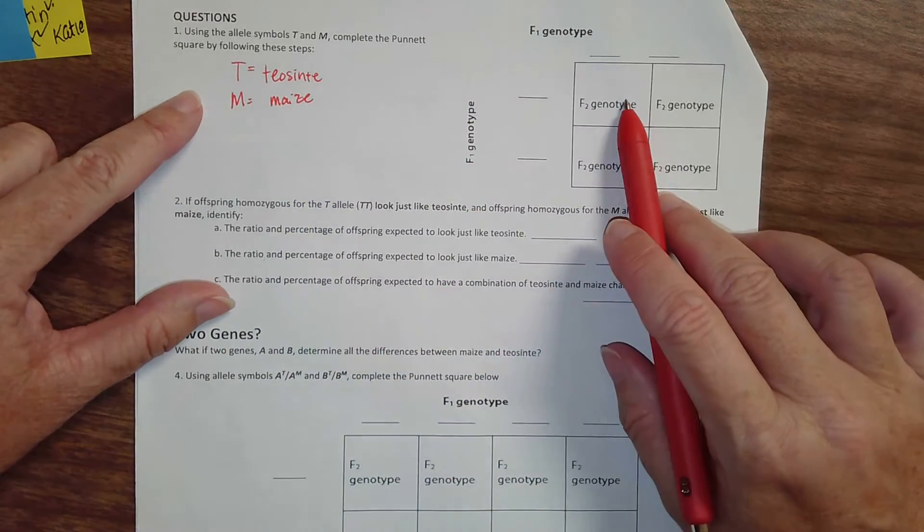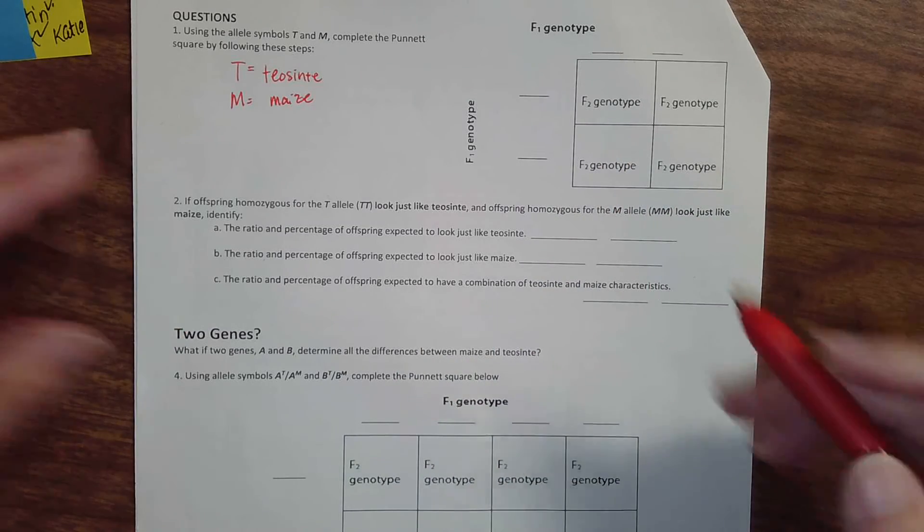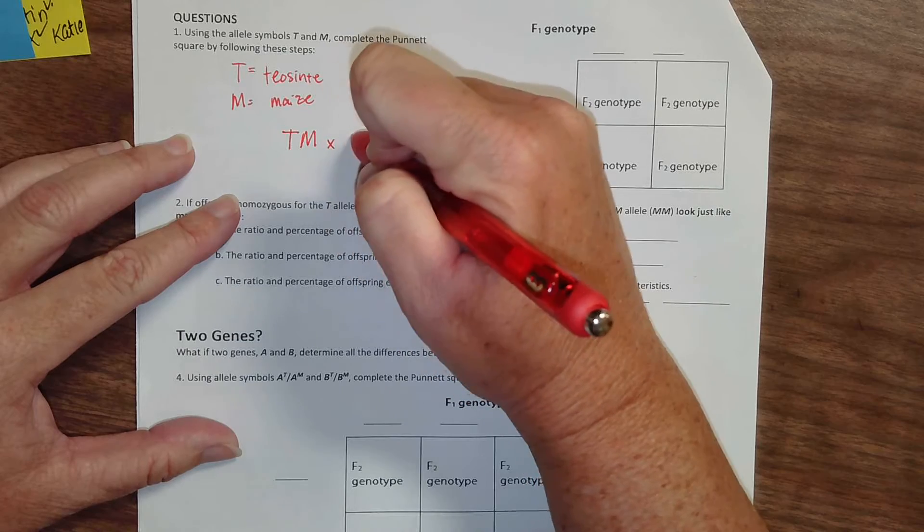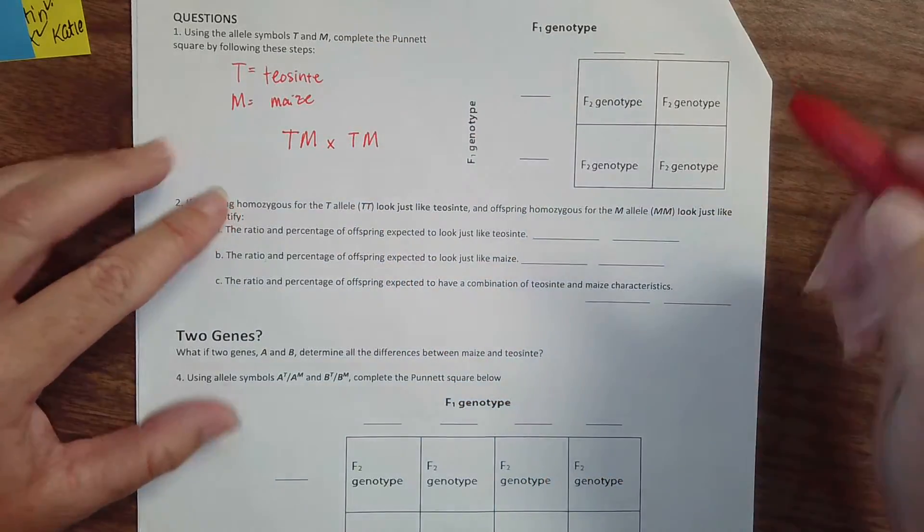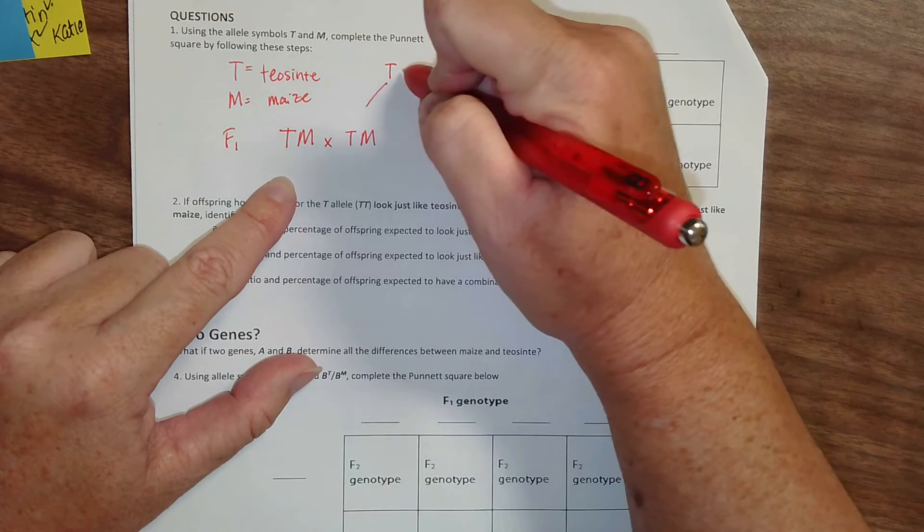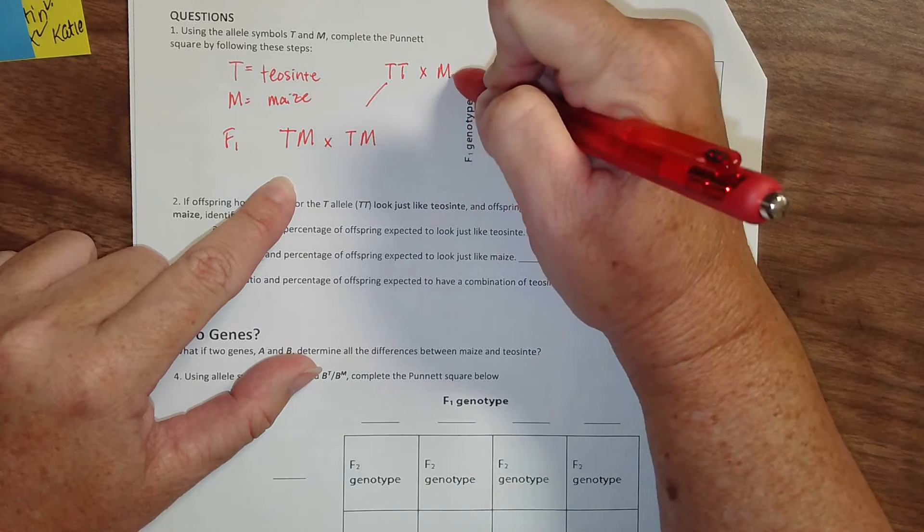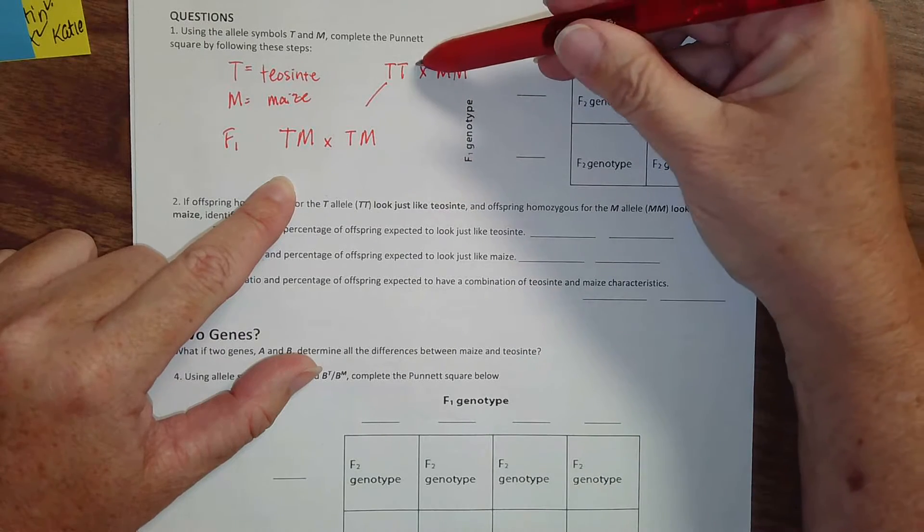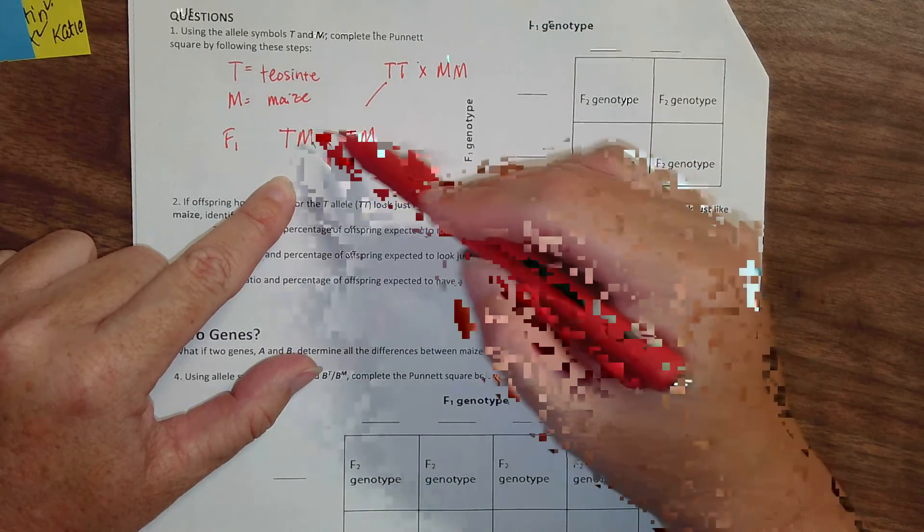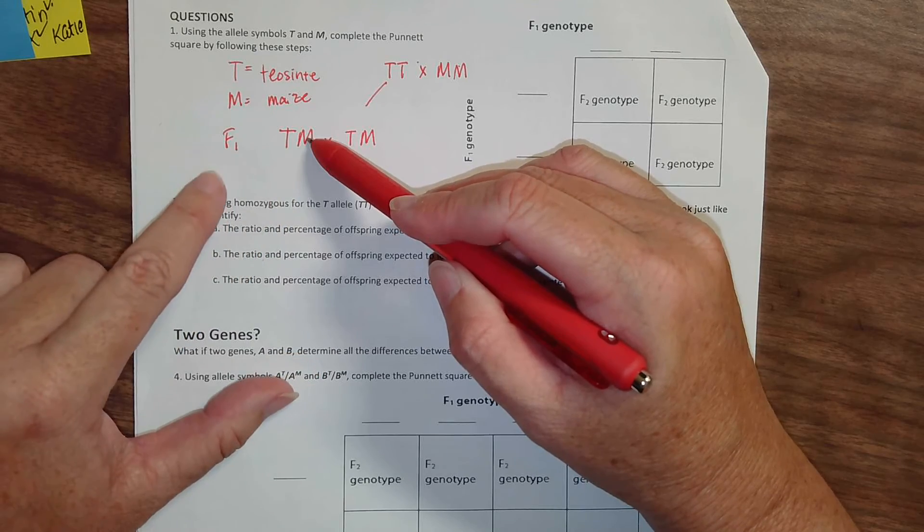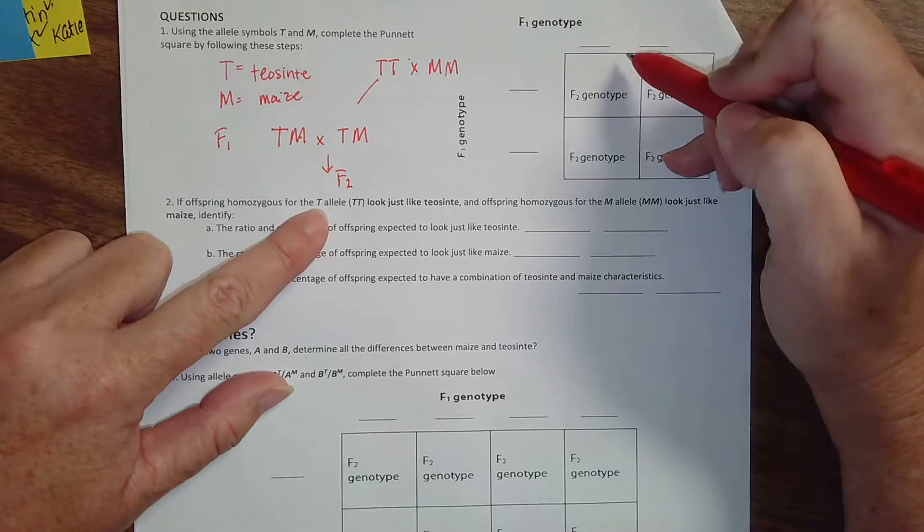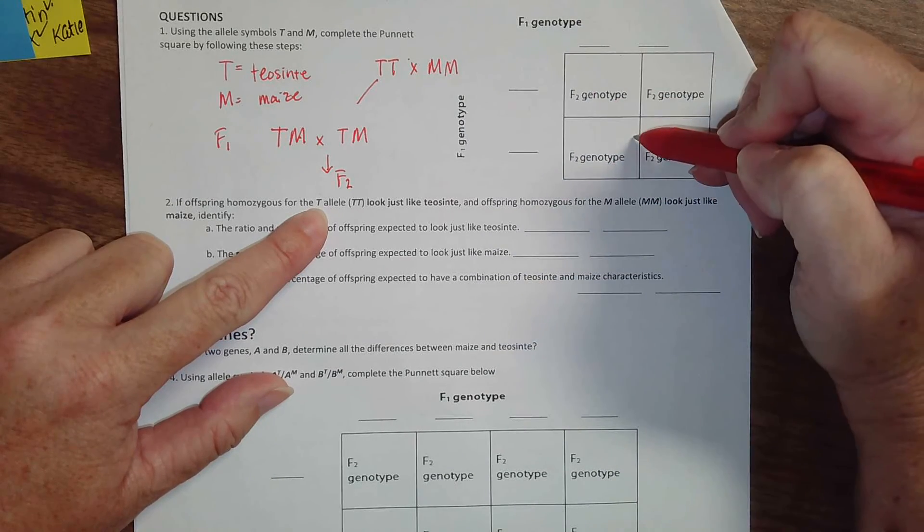So what we're going to do in this Punnett square, it tells you on the page before that you're going to be crossing two hybrids. Because this is called the F1 generation. It came from where we took Teosinte and crossed it with maize. Pure Teosinte crossed with pure maize gave us this hybrid. When we cross the hybrid with itself, that's called the F1 generation, we get the F2 generation. The F2 generation is what we're going to see here in our Punnett square.